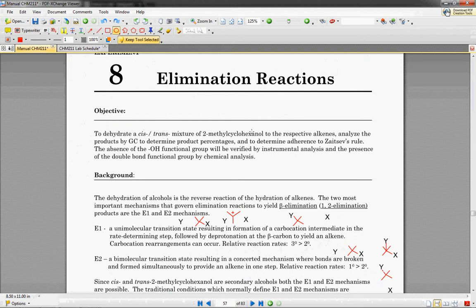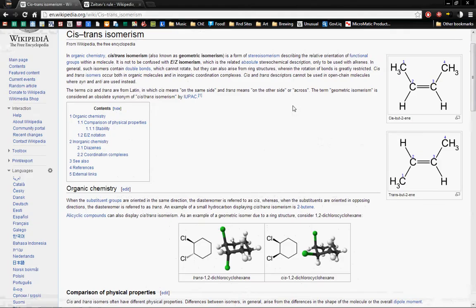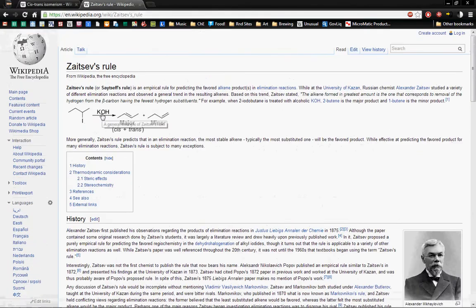It's a mixture of 2-methylcyclohexanol to their respective alkenes, and alkenes are just double-bonded carbons. We'll analyze the GC product to determine if they adhere to Zaitsev's rule. I've pulled up Zaitsev's rule for you. It means that when you've got a double bond, it's going to prefer to be on carbons that are bonded to more carbons as opposed to carbons that are not bonded to that many carbons. In this case, we've got this carbon bonded to two other carbons, and this one is also bonded to two carbons.